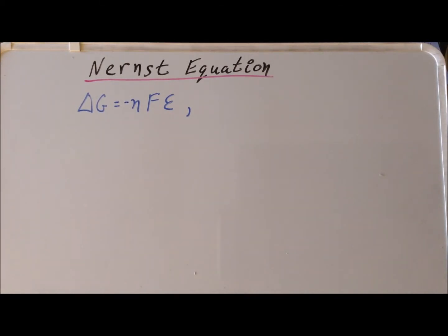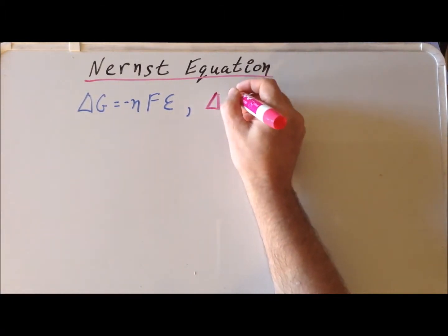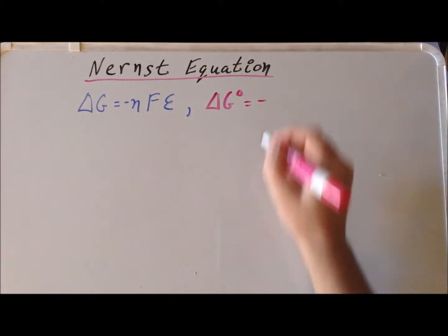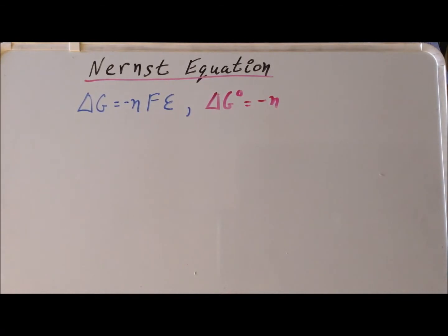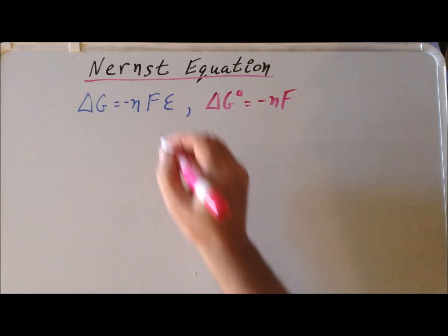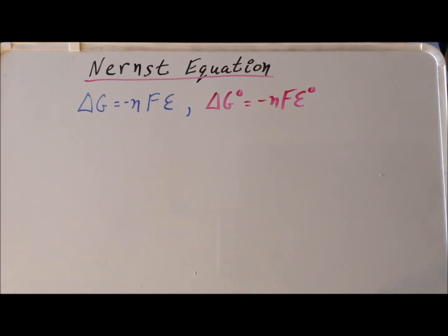Now let's specialize this general equation to the special case where we are under standard conditions — where all the reactants or products have a concentration of one molar, or they have a partial pressure of one atmosphere. In that case, delta G becomes delta G naught, the minus sign stays the same, N and F stay the same, but now we replace the electromotive force with E naught, the electromotive force under standard conditions.